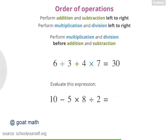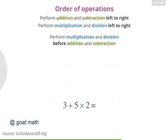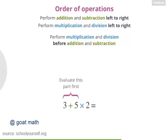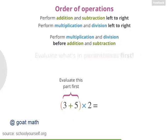Nicely done! That was tricky. This expression is equal to negative 10. Now let's return to a simpler expression: 3 plus 5 times 2. What if you wanted to indicate to someone that they really should add 3 and 5 before multiplying by 2? Well, there's a way to do that — you'd put parentheses around the 3 plus 5.